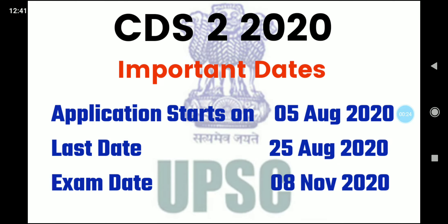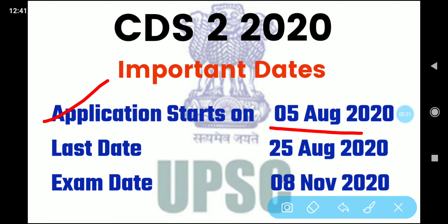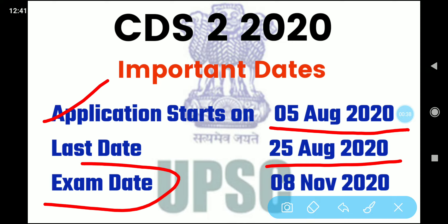First we will see the important dates of the examination. CDS 2 to 120 application will start from 5th of August 2020, and you can fill the form up to 25th August 2020. Your examination date will be on 8th of November, which is a Sunday. The examination is always held on Sunday.